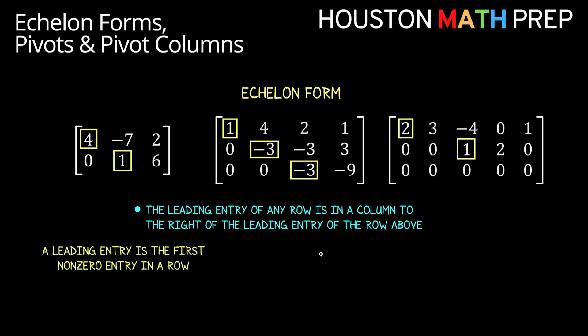So here you can see I've marked each leading entry in all of my example matrices. And you'll notice that each leading entry in any of these matrices is located to the right of any other leading entry above it in that same matrix. Here this one is to the right of this four above it. In the next matrix, you can see the leading entry of the bottom row is farther to the right than the one above, which is further to the right than the one above it.